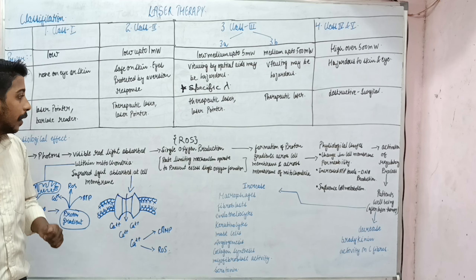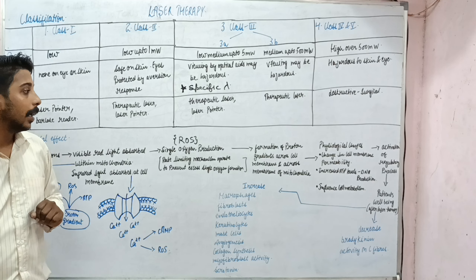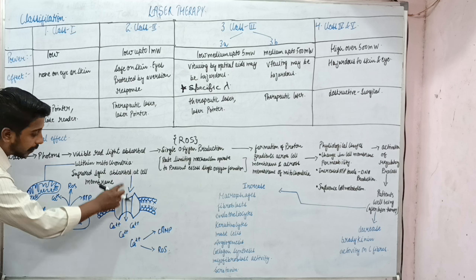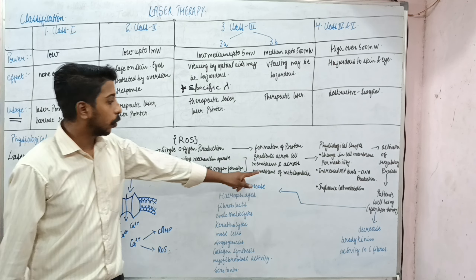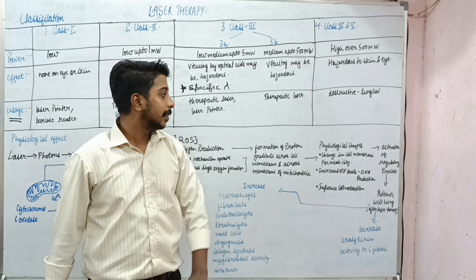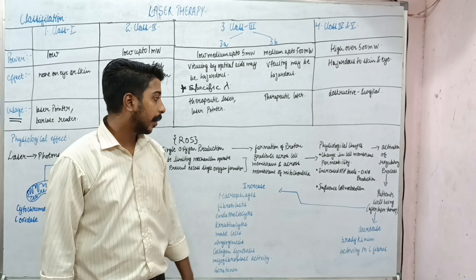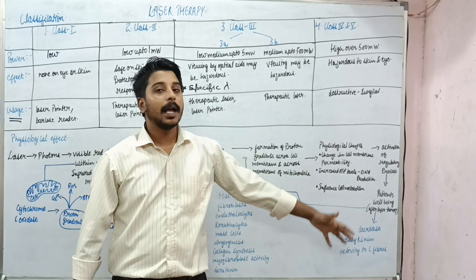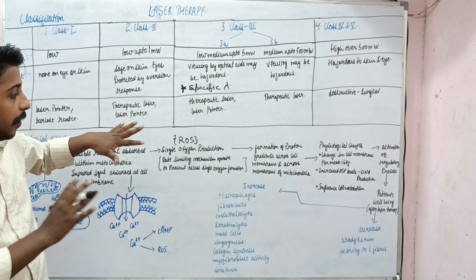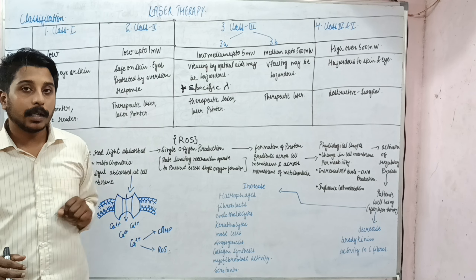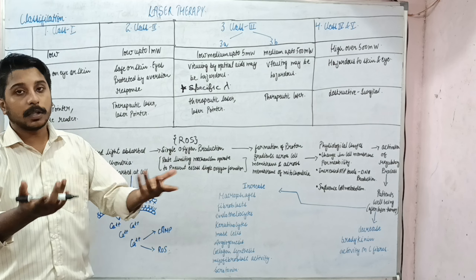To summarize the mechanism: there is singlet oxygen production, formation of a proton gradient across the cell membrane and across the mitochondrial membrane. Calcium moves inside at both levels. This leads to physiological changes — change in permeability, increased ATP and DNA production, influence on cell metabolism, activation of regulatory processes — and ultimately helping the patient's well-being.